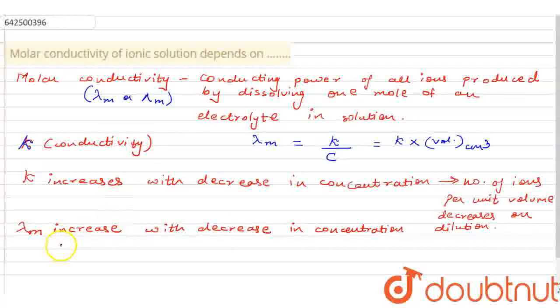So, in this case, obviously, we can understand it well that since the total volume, which is containing one mole of electrolytes is increasing, definitely your molar conductivity would increase, and it is very much seen from the expression also that lambda M and C, that is concentration is inversely proportional. So, this is one factor that is the concentration factor.